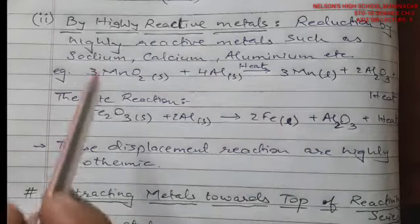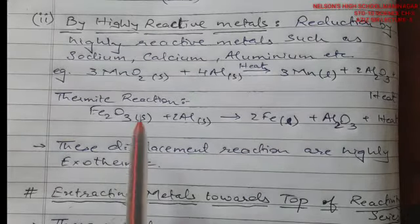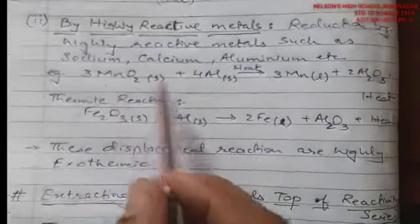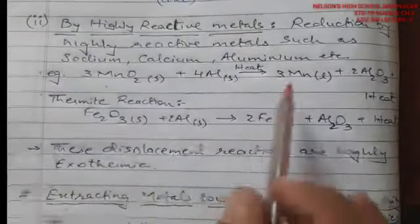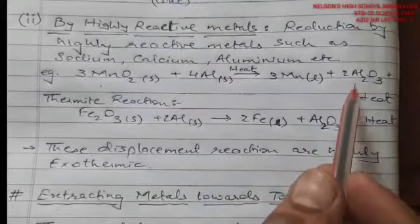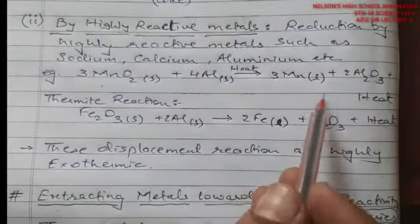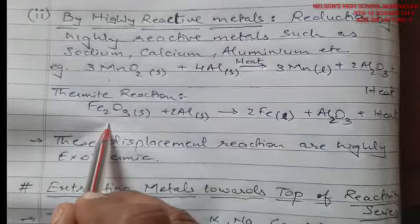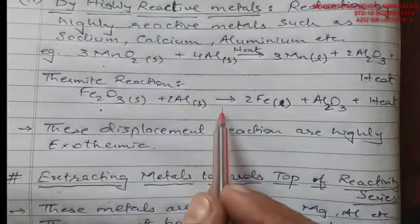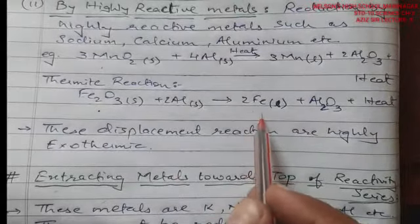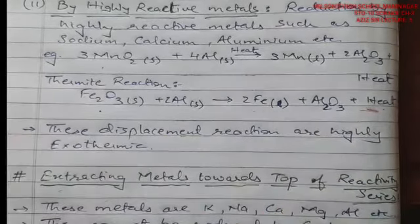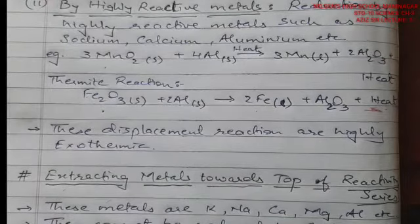In a displacement reaction, for example, manganese oxide reacting with aluminium: since aluminium is more reactive than manganese, it displaces manganese, forming free manganese (in liquid state due to high heat) and aluminium oxide. This is called the thermite reaction — it is an exothermic reaction. Similarly, iron oxide in the presence of aluminium: the reaction, once initially heated, becomes a chain reaction, melting out iron with a large amount of heat liberated, and aluminium oxide is formed.